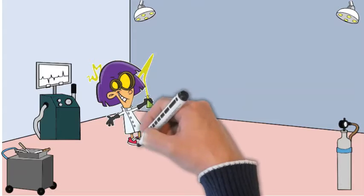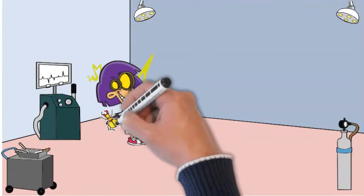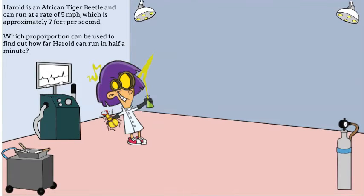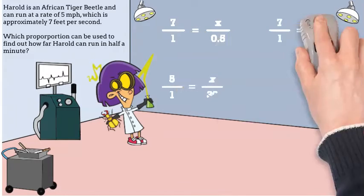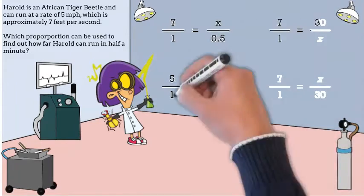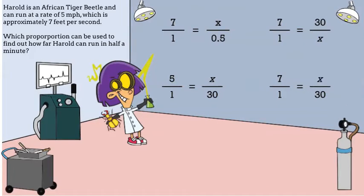Let's use Harold's speed data to show how to represent proportional relationships with proportions and graphs. Harold is an African tiger beetle and can run at a rate of five miles per hour, which is approximately seven feet per second.